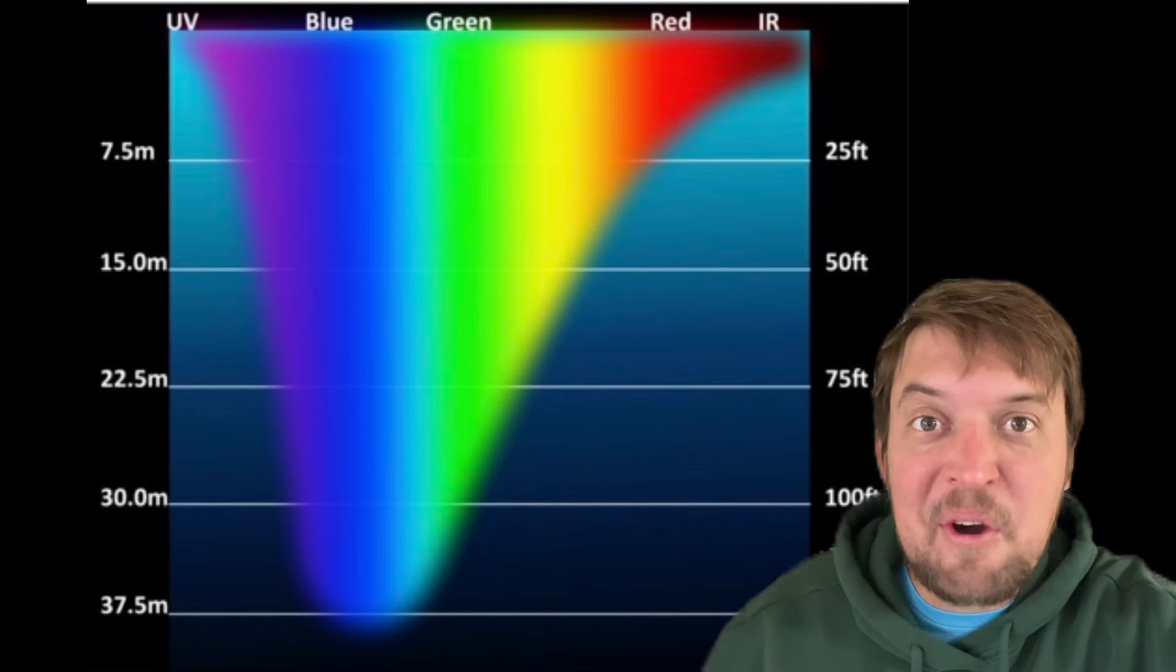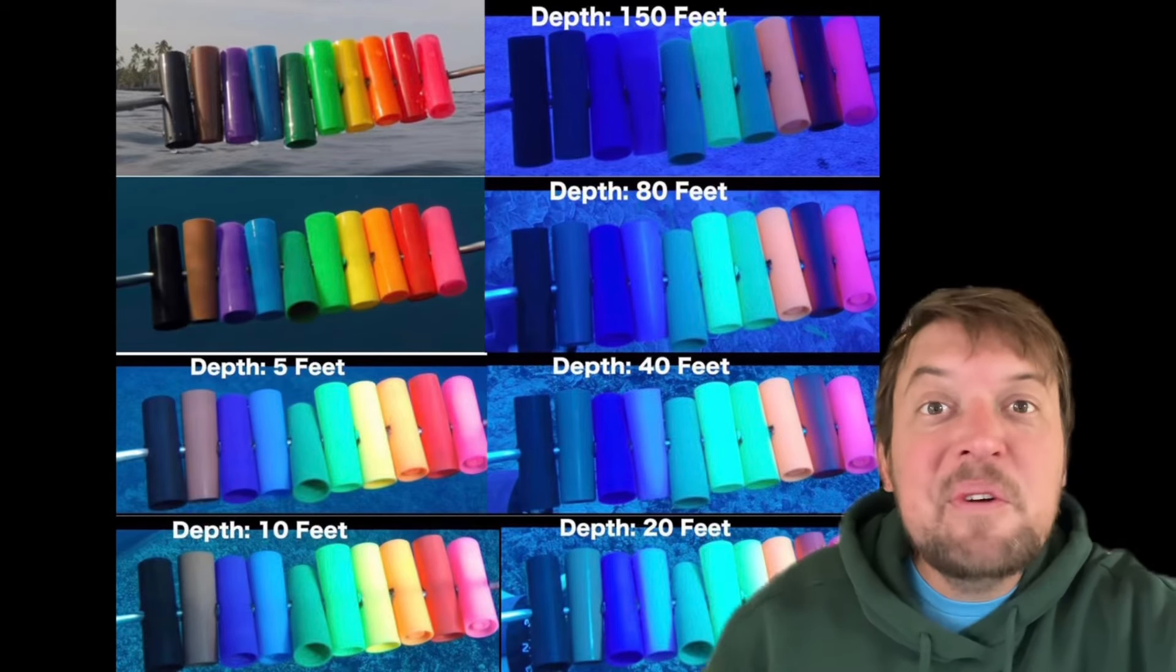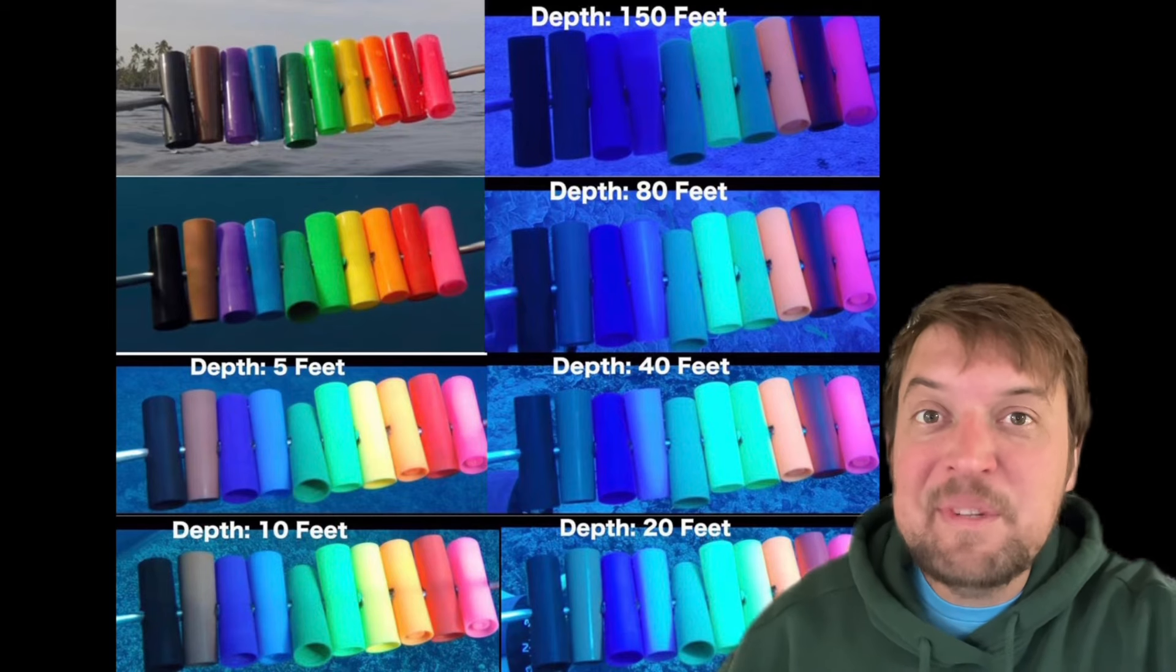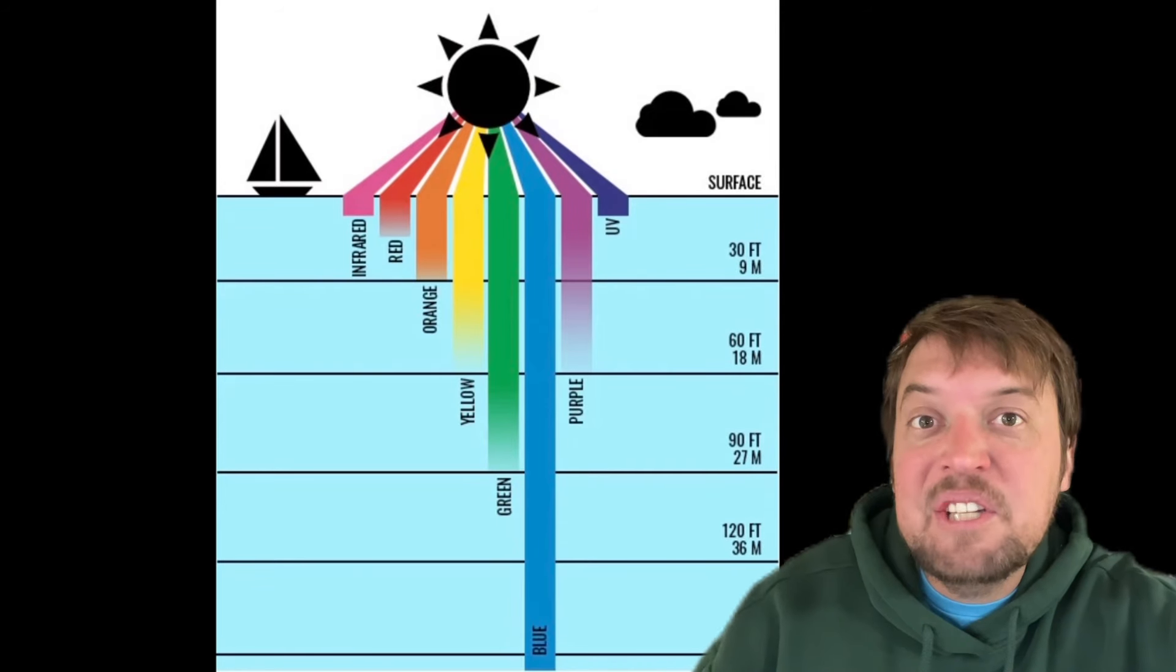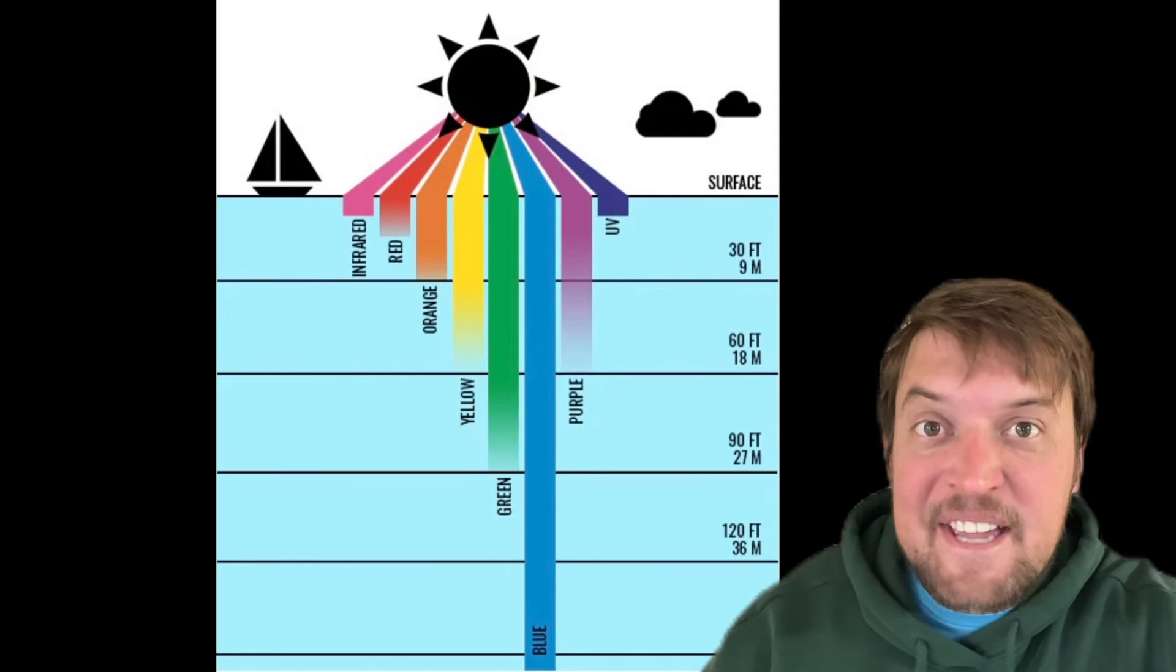Like how light behaves in the ocean. Obviously, it gets darker the deeper you go. But also different wavelengths of light get absorbed at different rates. Red light gets absorbed faster than blue light, which makes a vertical gradient of light in the water.